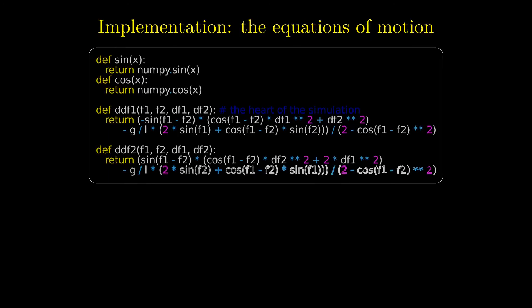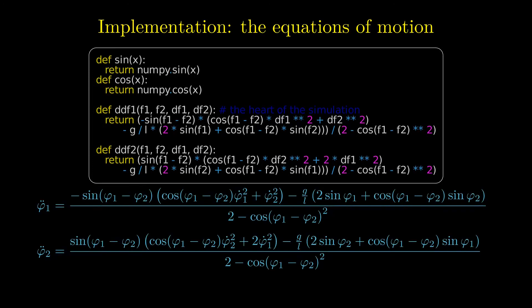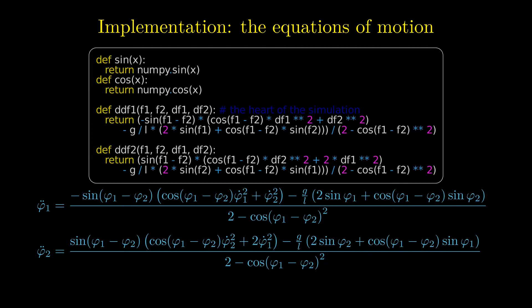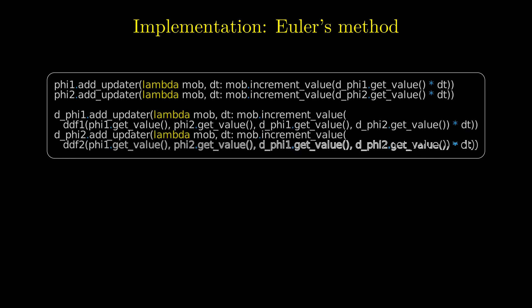The heart of the simulation consists of the implementation of the equations of motion. To shorten the expressions, the letter f is used instead of phi and derivatives are denoted with the letter d in front of the expression. The correspondence between the last two lines of code and the equations of motion written below should be recognizable even when you are not very familiar with coding. In the third step, Euler's method is implemented with the help of updater functions.